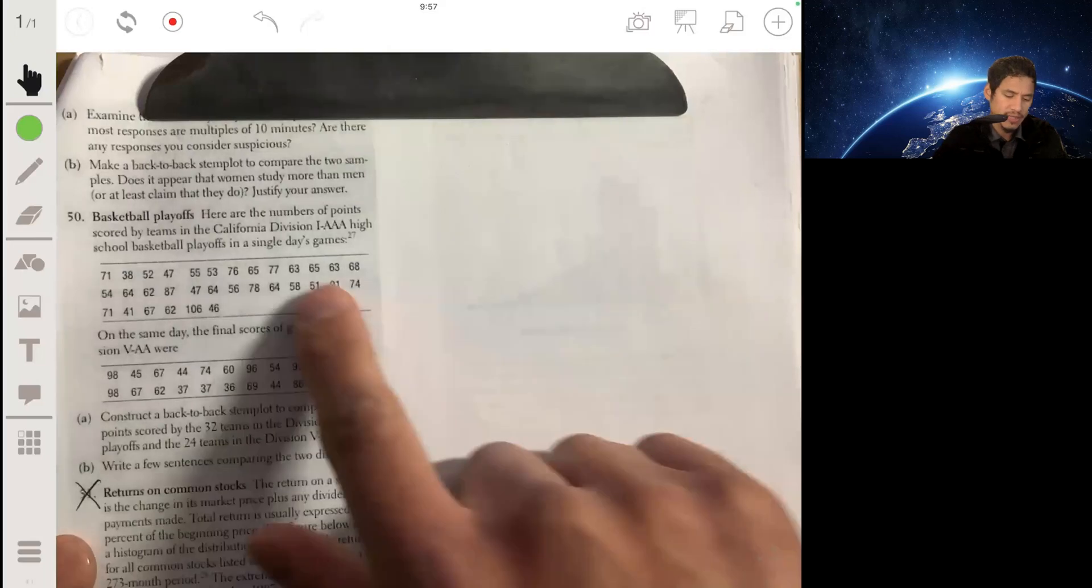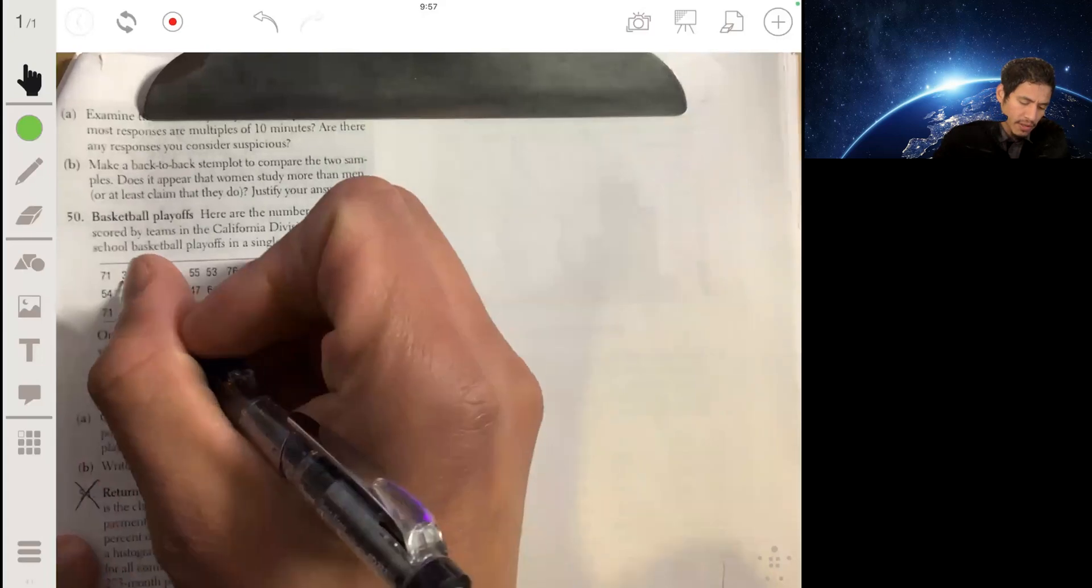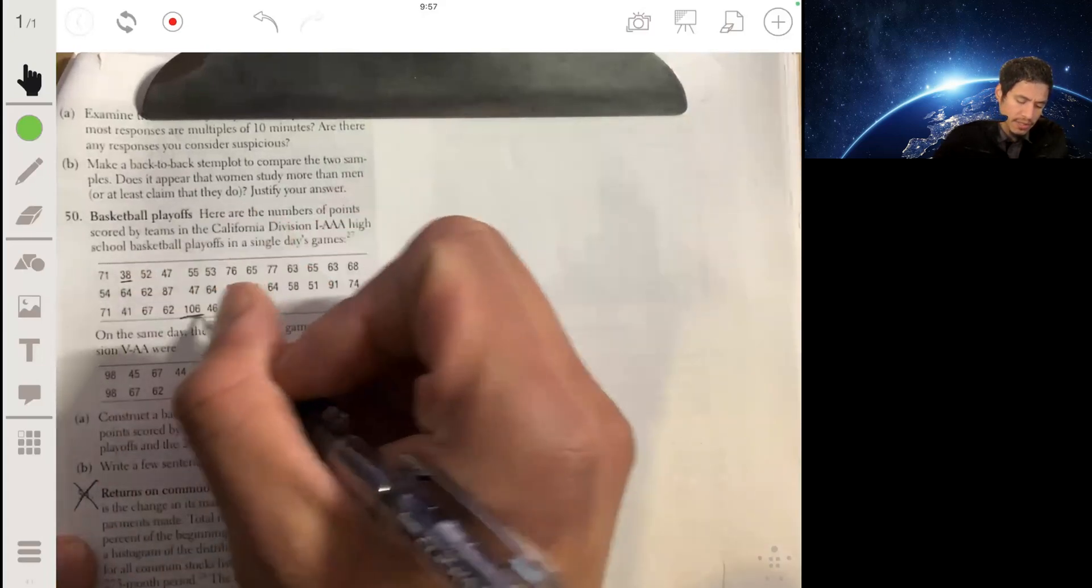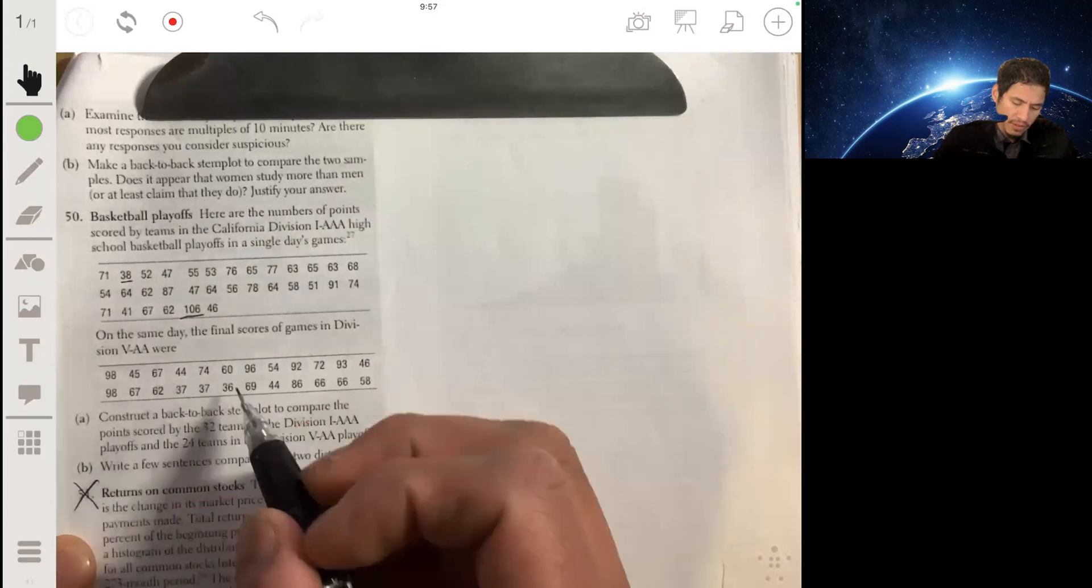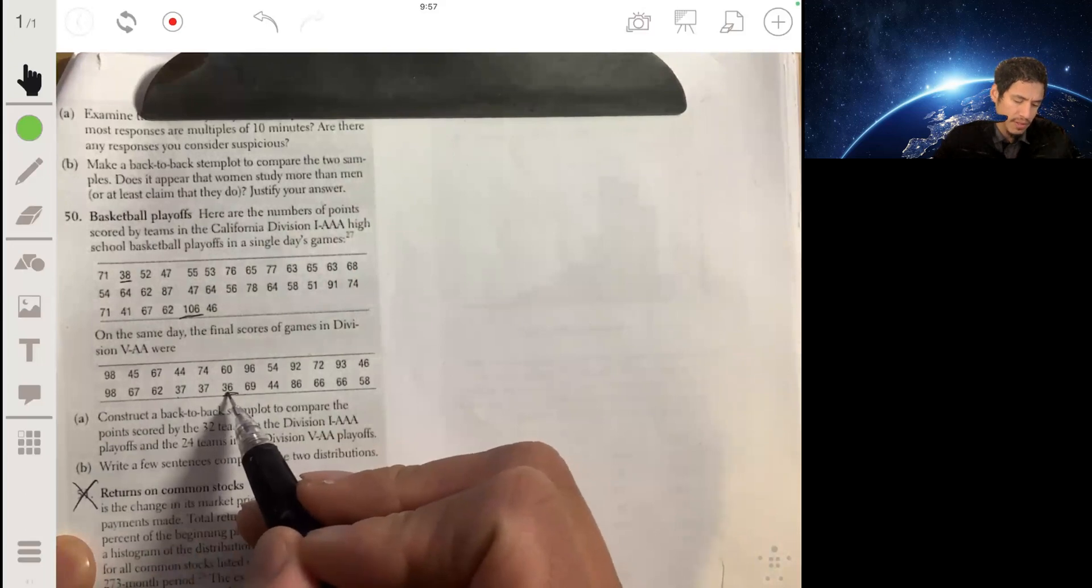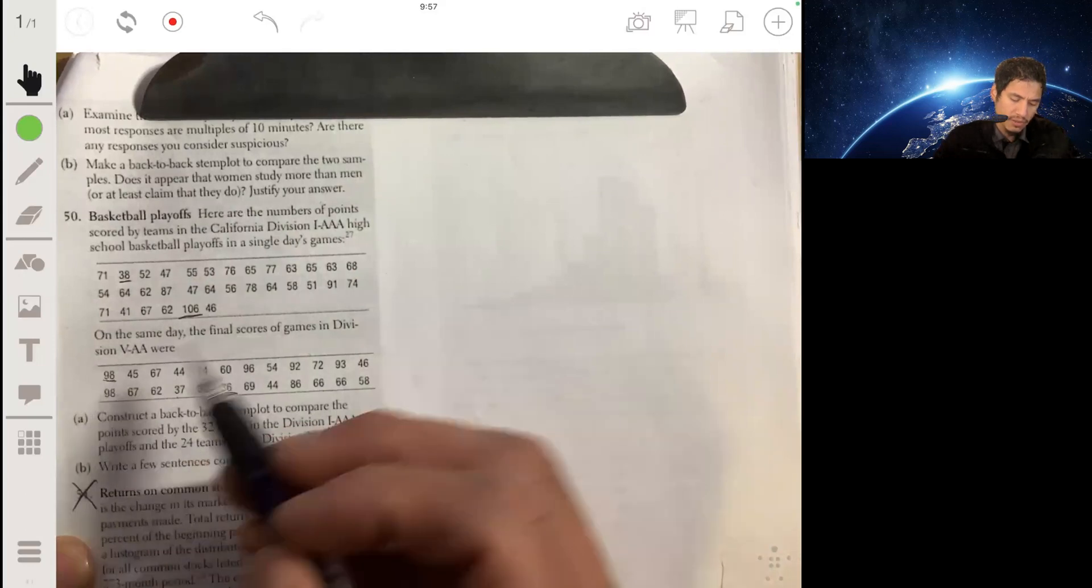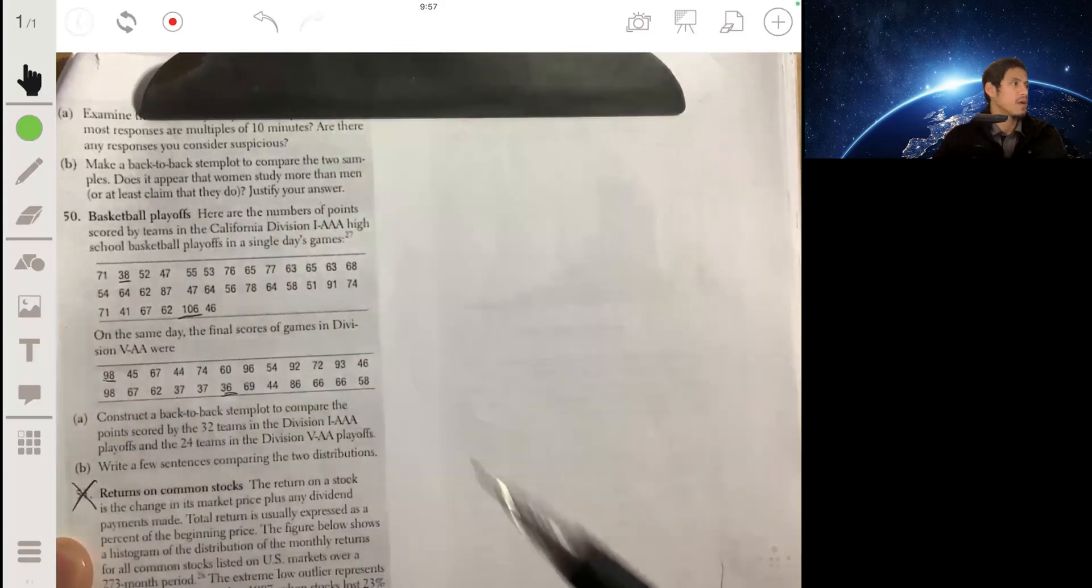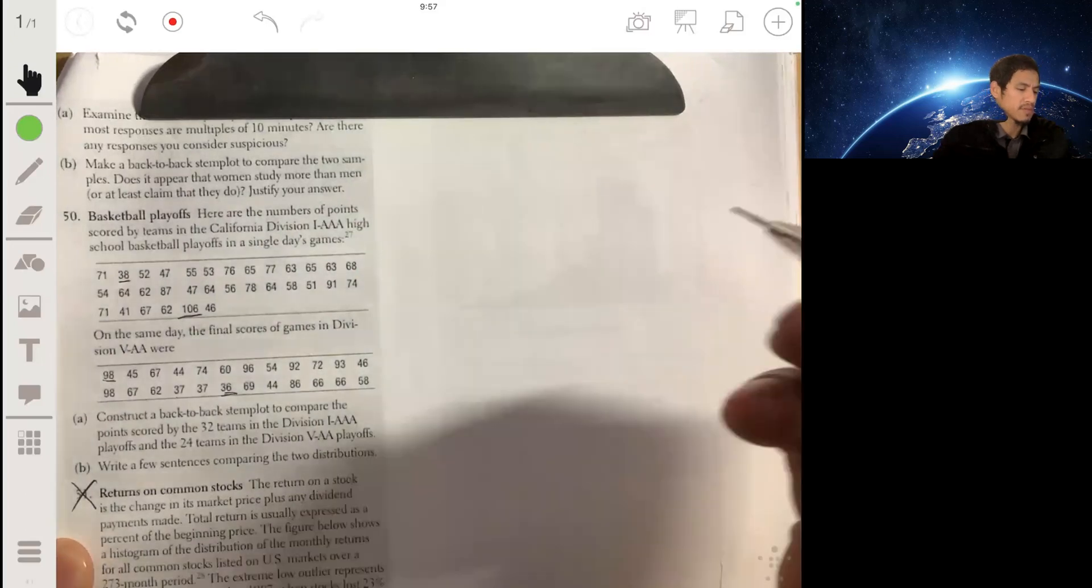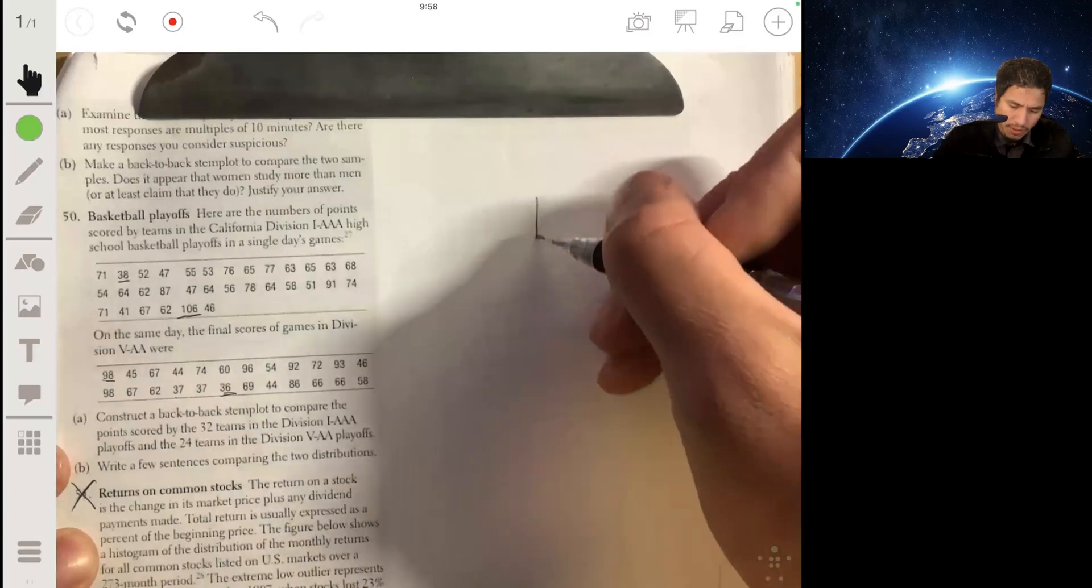Then we're gonna write a few sentences to describe it. For a back-to-back stem plot we're gonna need to figure out what the values go from. So we have like 38 as our lowest here and 106 for this one. So we can go from basically the 30s to the 100s, so we're gonna have our stems be 3, 4, 5, 6 all the way through 10.